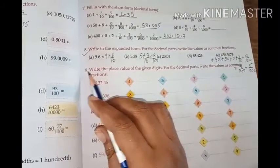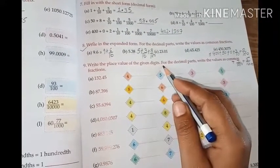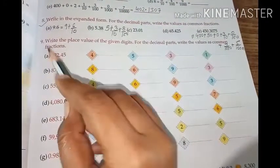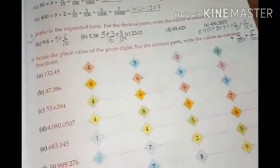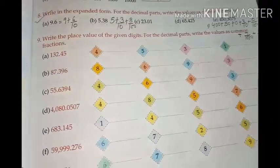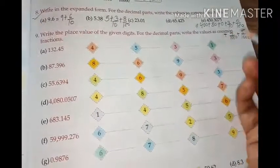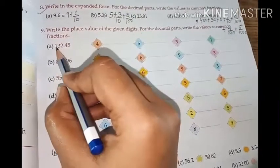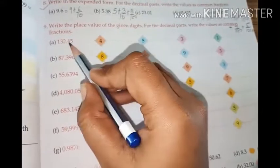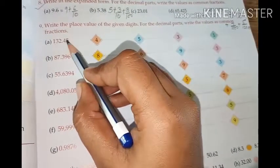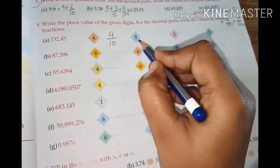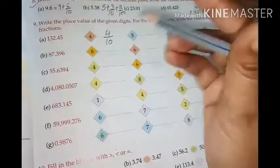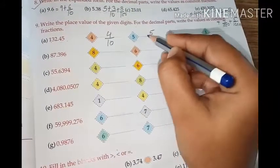Now question number 9. Write the place value of the given digits. For the decimal part, write the value as common fraction. Just now in question number 8, we will write them as decimal parts to common fractions. So, 132.45, 4's place value to tell you. This is the first digit. So, how do you write it in common fractions? 4 by 10. 5 is at the second digit, so 5 as it is, because it is the second digit, after 2 zeros will be left, 5 by 100.